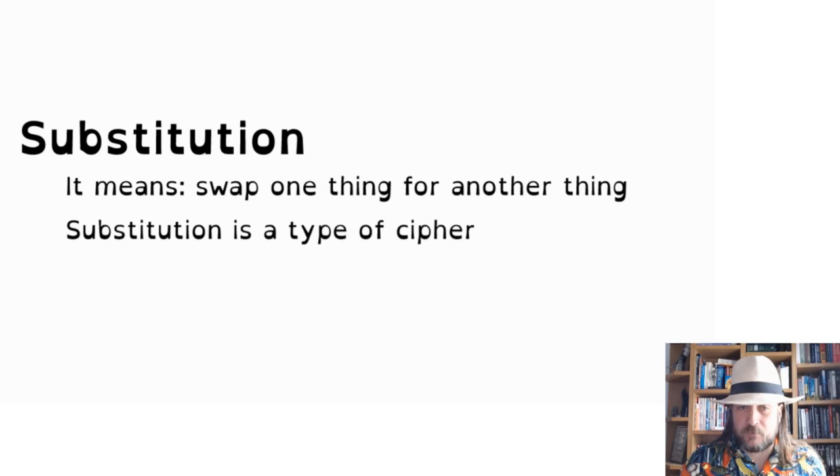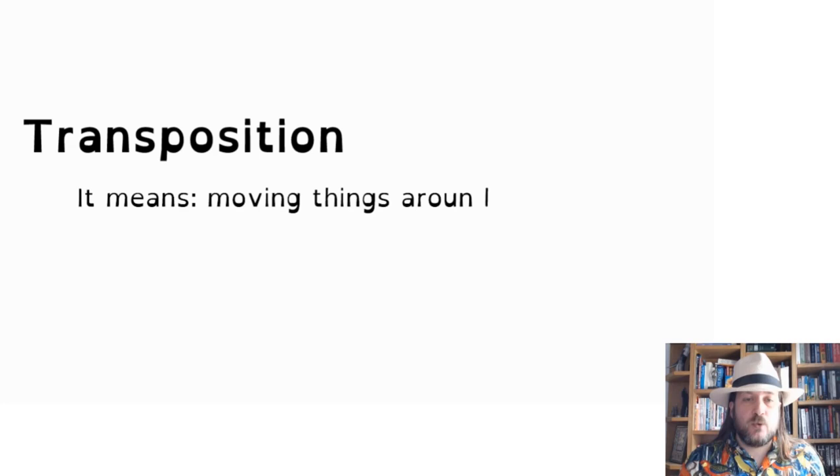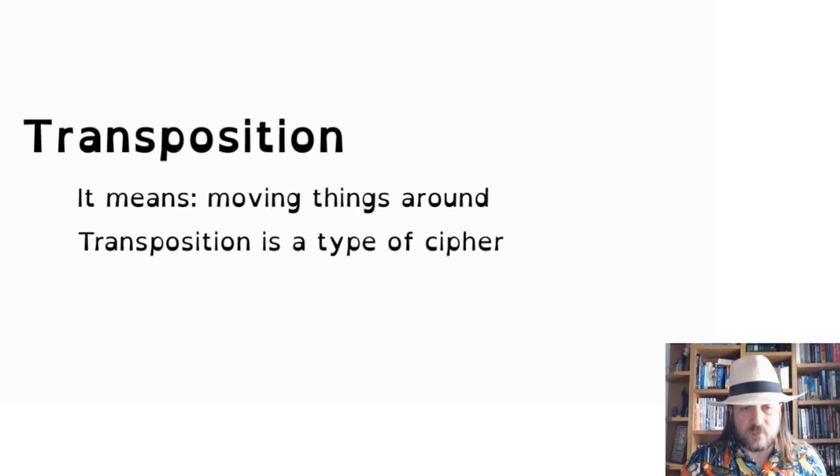Ciphers use two main techniques to make a clear text secret. The first one is substitution, which means switching one thing for another — just like a substitute in sports where one player is changed for another. The second is transposition, which just means to move things around without changing them in any other way. We use the word cipher to mean a secret code, as opposed to a normal code. Codes are really substitution codes, but cipher still means something secret.